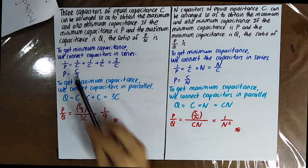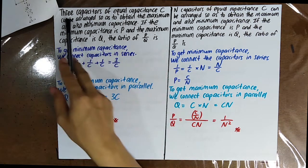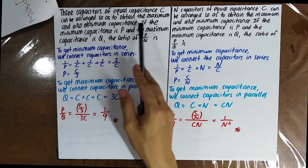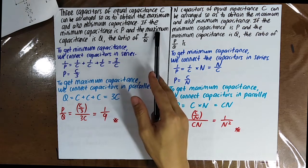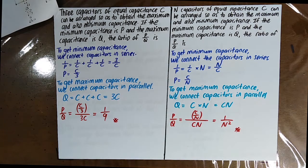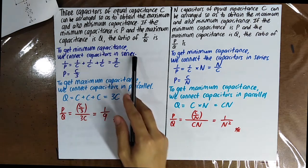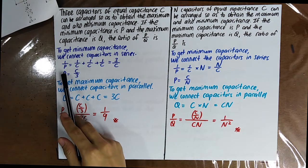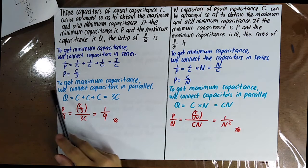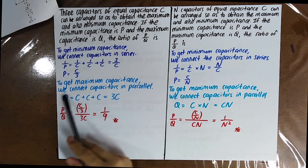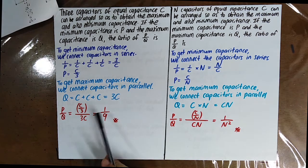Three capacitors of equal capacitance C can be arranged to obtain maximum and minimum capacitance. If the minimum capacitance is P and the maximum capacitance is Q, what is the ratio P over Q? To get the minimum capacitance, connect the capacitors in series — the equivalent capacitance P equals C over 3. To get the maximum capacitance, connect them in parallel — Q equals 3C. Therefore the ratio P over Q equals 1 over 9.